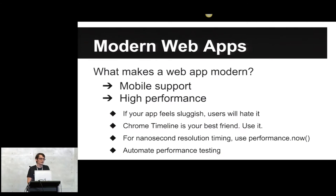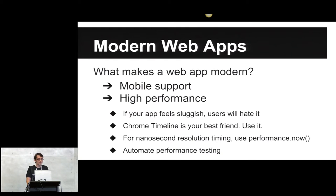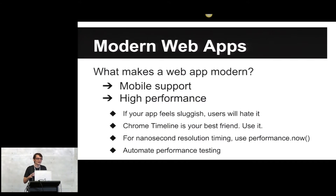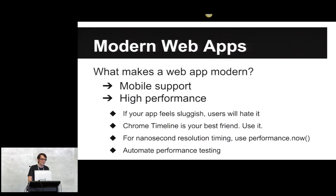As you saw in the keynote, GWT can outperform hand-coded JavaScript and is only about twice as slow as a JVM. So keep that in mind when you're writing your code. If your users think it's slow, they won't like it, they won't stick around. When you're building your modern web app, don't just start piling every framework under the sun in, because you're going to wind up downloading three megabytes of junk before you get to load anything on the page.